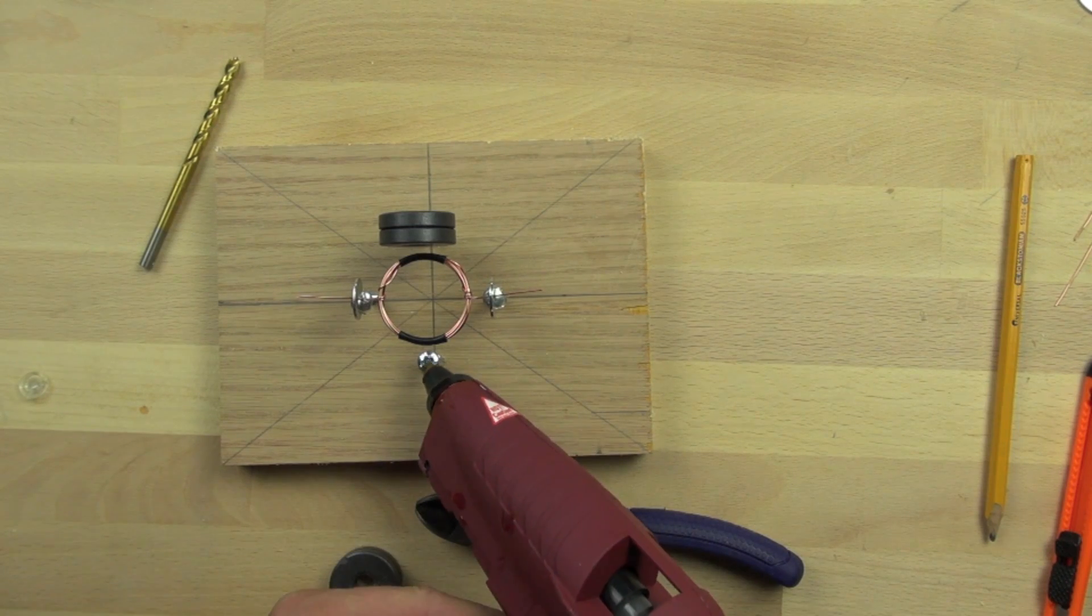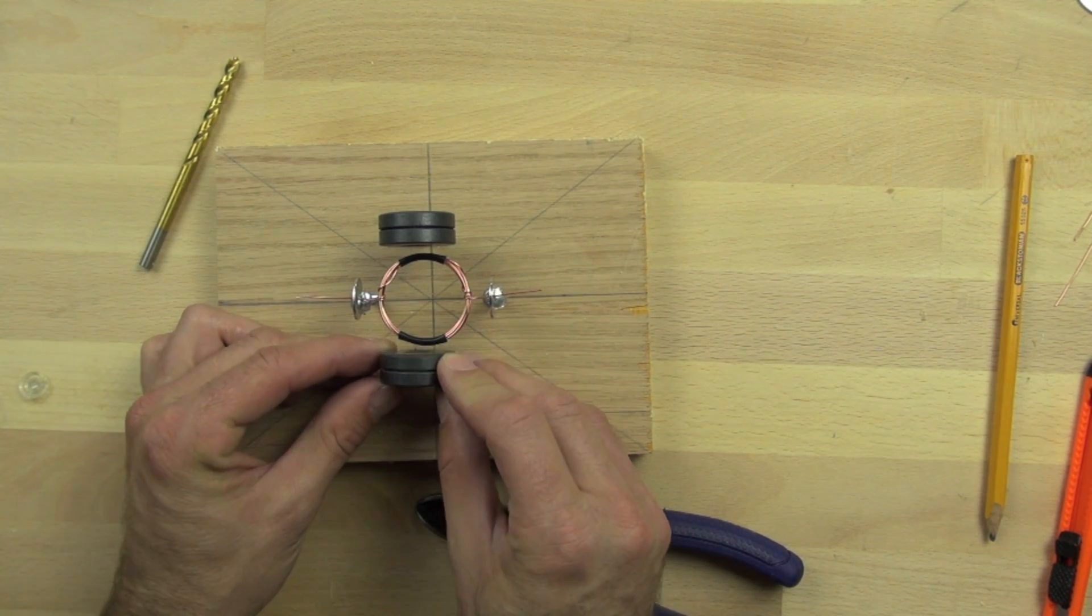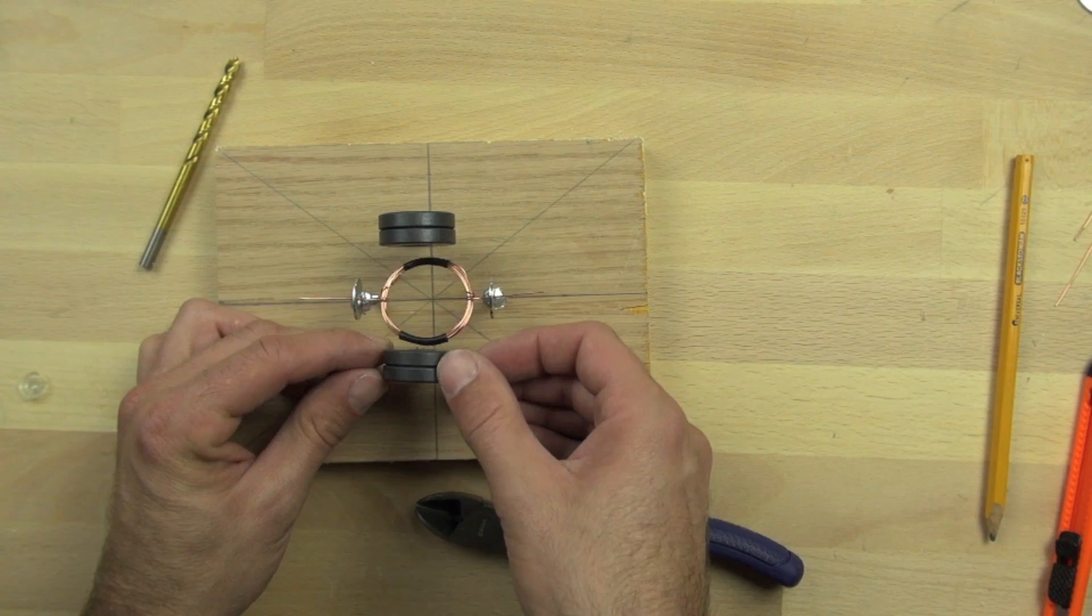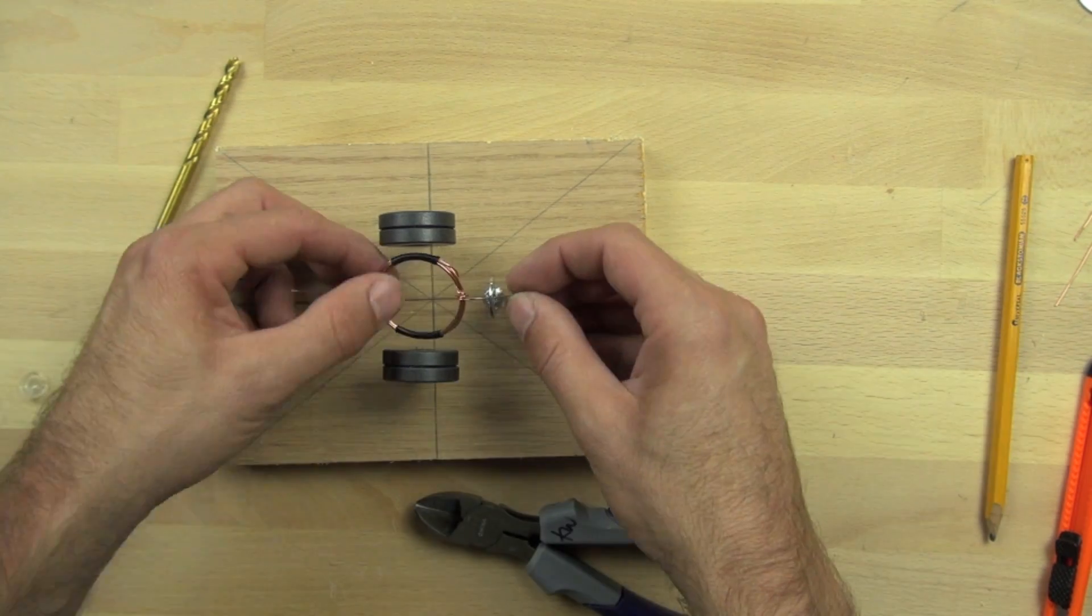So now we found out that the magnet was a little too close. And so we were able to take it off with the hot glue, just pop it off, and then reposition it.